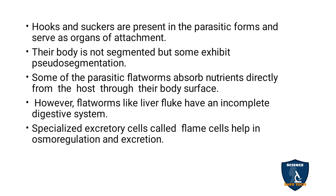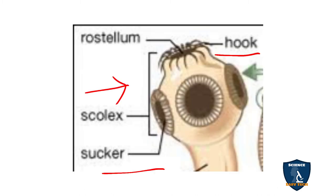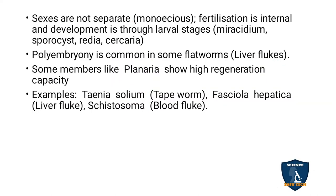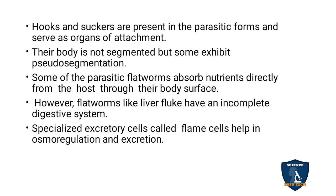The body is non-segmented, but some exhibit pseudo-segmentation. In tapeworms, you can see segments — but in liver fluke and planaria there is no true segmentation. In tapeworm, these are false segments, called pseudo-segmentation, which is an evolutionary sign that the next phylum will have true segments.